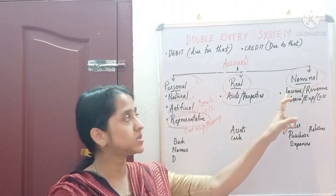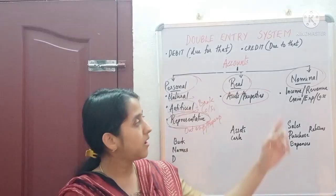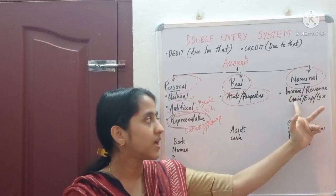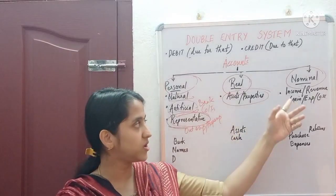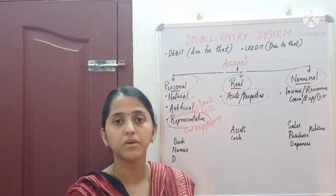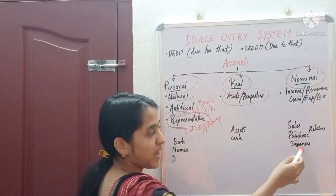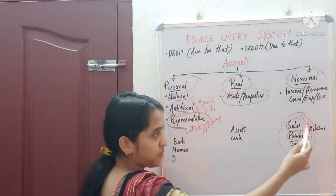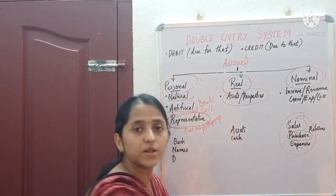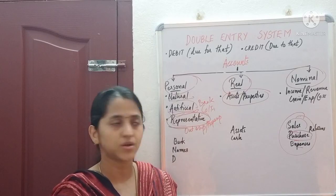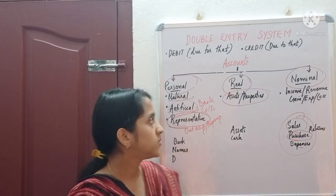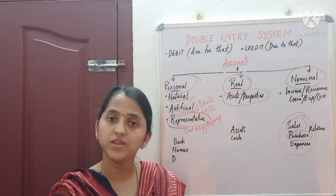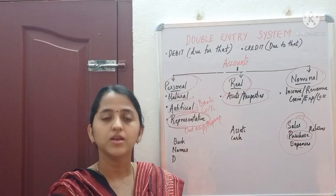The third type of classification is nominal account. Nominal accounts relate to income, revenue, gains, expenses, and losses. For example, sales, purchase, and expenses are all nominal accounts because sales is income, purchase is an expense, and salary, advertisement, and discounts all come under nominal account. These are the main classifications of accounts. In accounting, we first record each transaction in a journal, then move to the ledger.